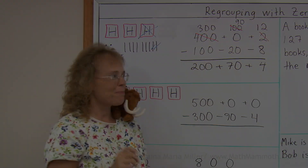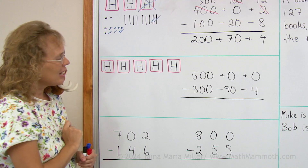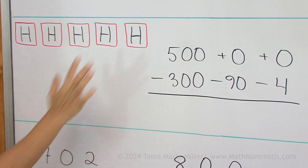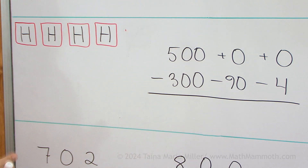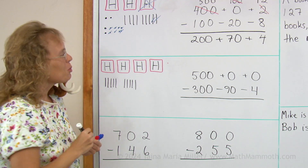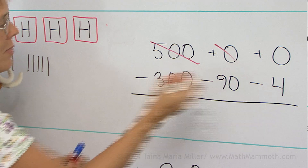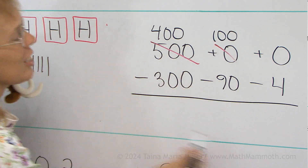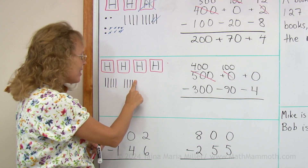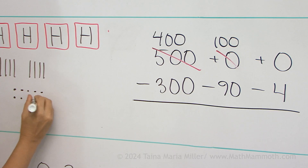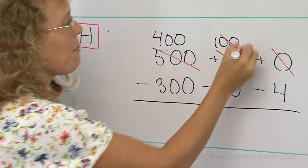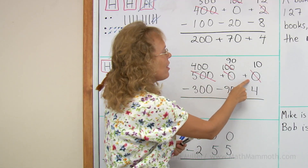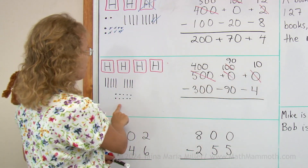But let's do all of this again with this next problem. This time I have 500. I need to subtract 390 and 4. There are no tens, no ones. So I will take 100 and break it into ten tens. I take 100, leaving 400, and then this 100 — it is ten tens — it goes into the tens column. Then the next step is I take one of the tens and break it down into ten ones, so it leaves 90 here and then ten here. This time I did not have any ones to begin with, so I just have now those ten that I got from breaking down the ten.